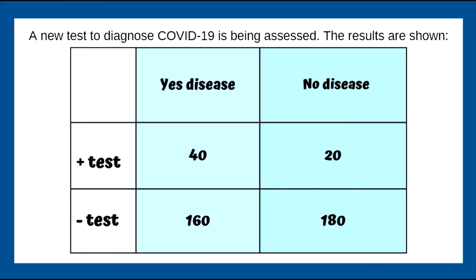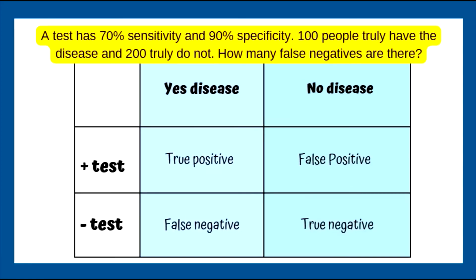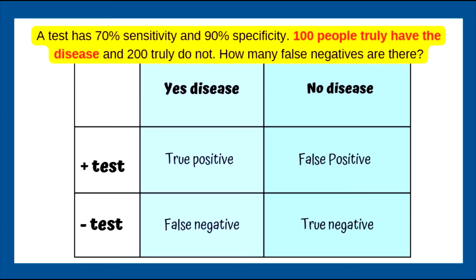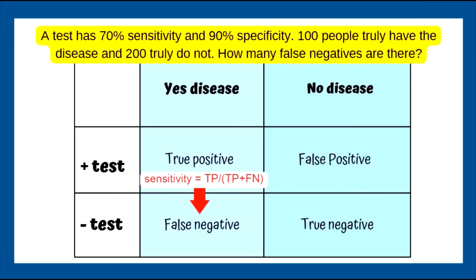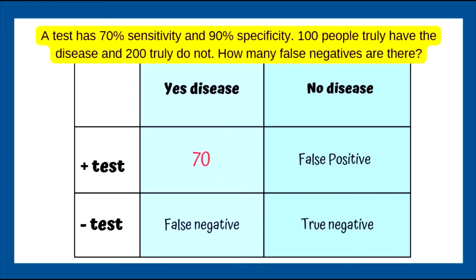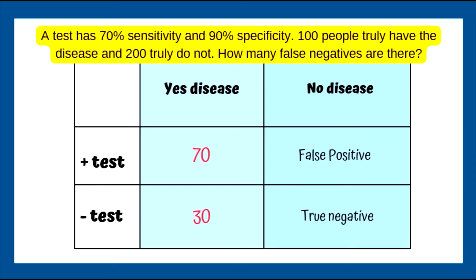Example: a new test to diagnose COVID-19. Sensitivity would be 40 over 40 plus 160; specificity would involve 180 plus 20. A test has 70% sensitivity and 90% specificity — how many false negatives? 100 people truly have the disease. Sensitivity is true positive over true positive plus false negative equals 70%, so true positives equal 70. Since 100 truly have the disease, there are 30 false negatives.